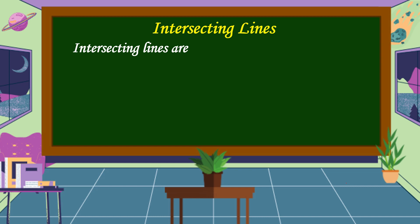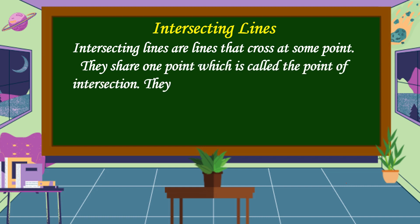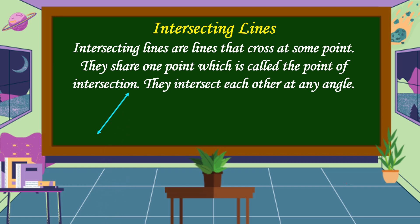What are Intersecting Lines? Intersecting Lines are lines that cross at some point. They share one point which is called the point of intersection. They intersect each other at any angle. These are some examples of Intersecting Lines.